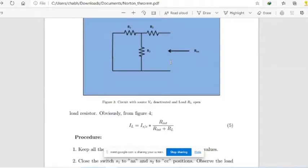After having both of them, we can easily find load current IL using the formula ISC into RINT divided by RINT plus RL. In this way, Norton's theorem would be verified very easily.